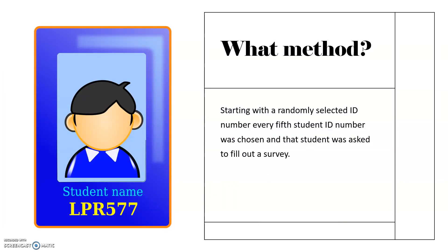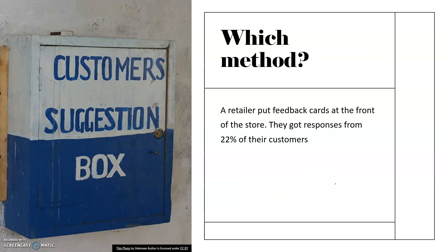Starting with a randomly selected ID number, every fifth student ID number was chosen and that student was asked to fill out a survey. This is very systematic — they have a method and they are using that method to select their sample. This is an example of systematic sampling.